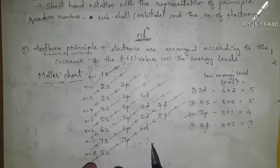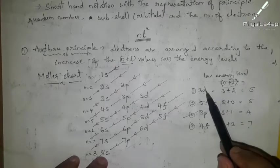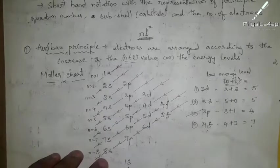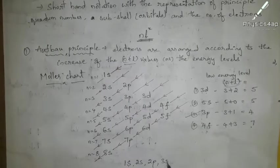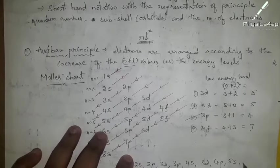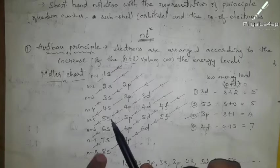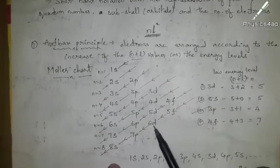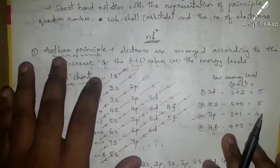All you need to know are the l values: s=0, p=1, d=2, f=3. Then use the Moeller chart order: 1s, 2s, 2p, 3s, 3p, 4s, 3d, 4p, 5s, 4d, 5p, 6s, 4f, 5d, 6p, 7s, 5f, 6d, 7p, 8s. This is a quick technique to find energy levels in less time.